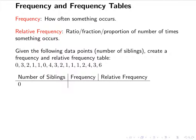So we're going to have the following columns: number of siblings, frequency, and relative frequency. One thing we have to do is count up how many total data points we have. If I count them all up, I have 16, so the total is 16.